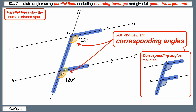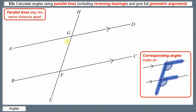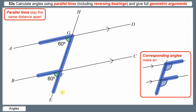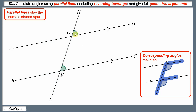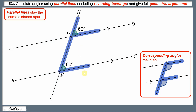DGF and CFE are corresponding angles, and there are lots of other corresponding angles on this diagram. Take AGF and BFE — these angles are both 60, and the F shape in this case is back-to-front, but it still counts. Take angle HGD and GFC — they are both 60 as well. The F shape here is upside down, but they're still described as corresponding angles.